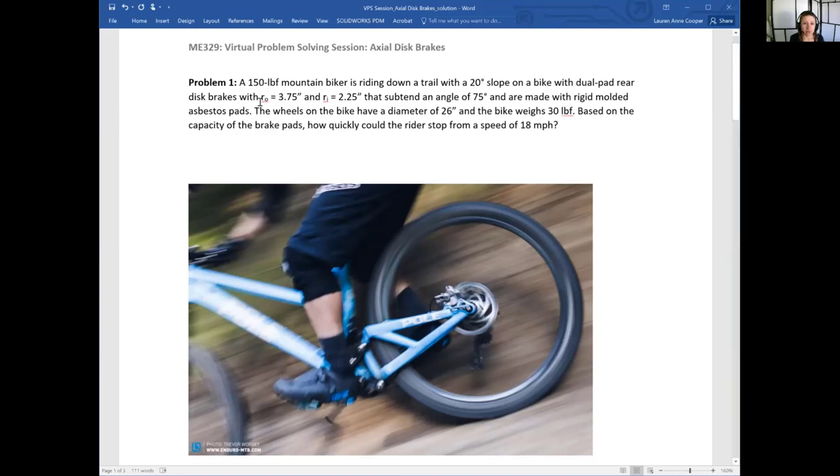The bike has dual pad rear disc brakes with an outer radius of 3.75 inches and an inner radius of 2.25 inches. That's the radius of where the disc brake pads sit on the rotor, not the wheel radius. The pad itself subtends an angle of 75 degrees and is made with rigid molded asbestos pads. The wheels have a diameter of 26 inches and the bike weighs 30 pounds. Based on the capacity of the brake pads, how quickly could the rider hypothetically stop from a speed of 18 miles per hour?